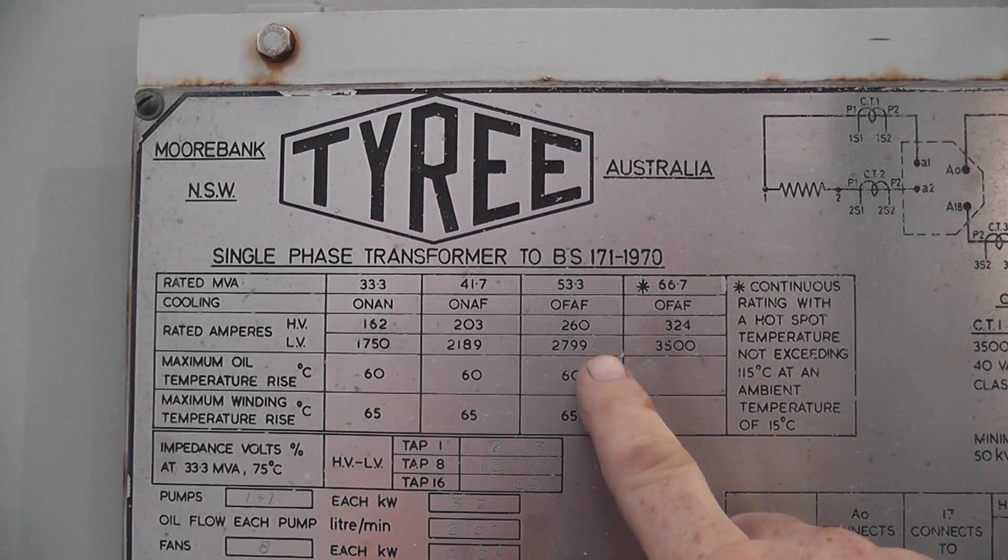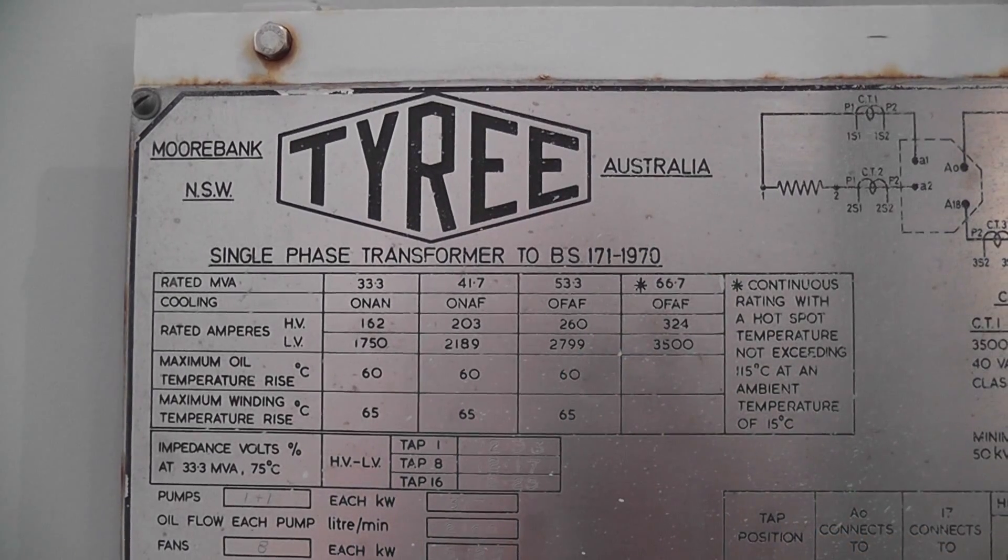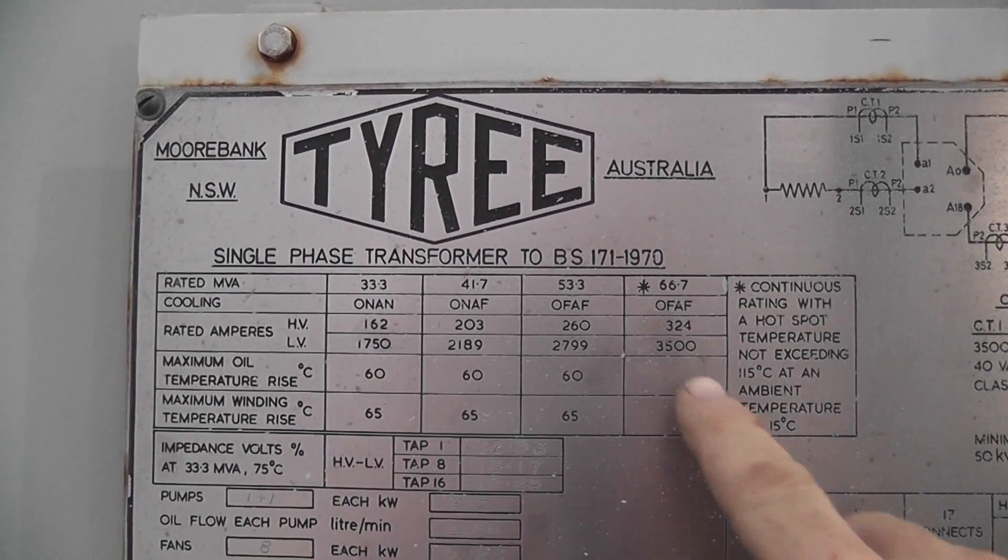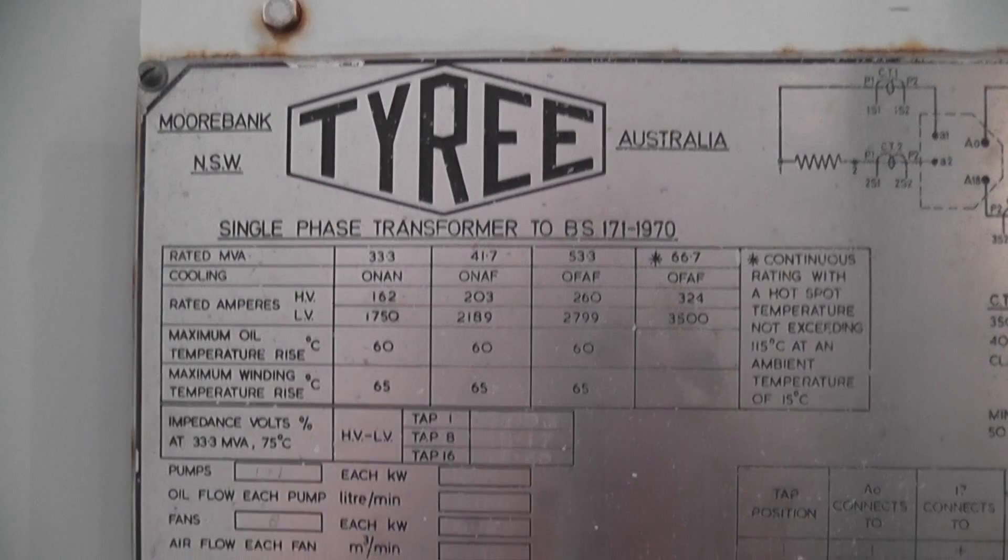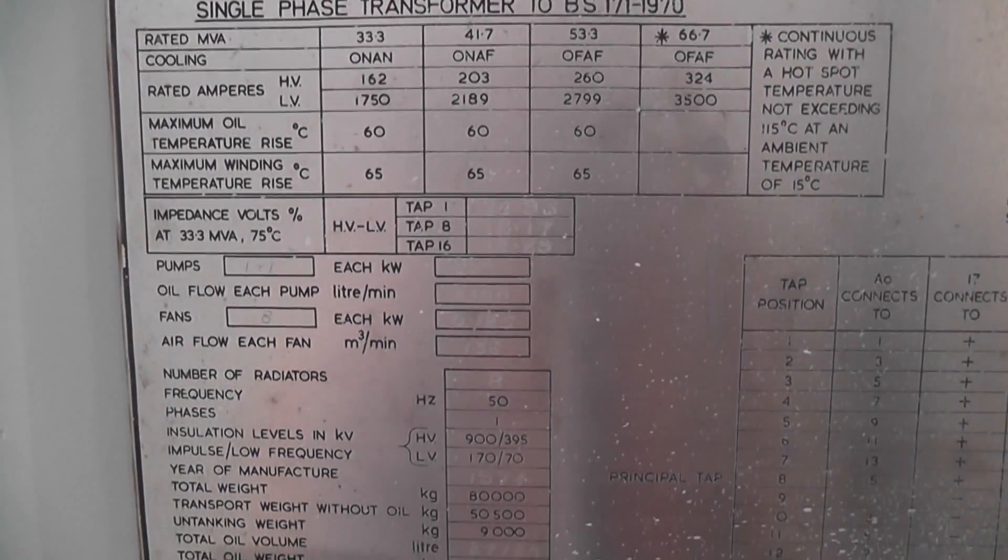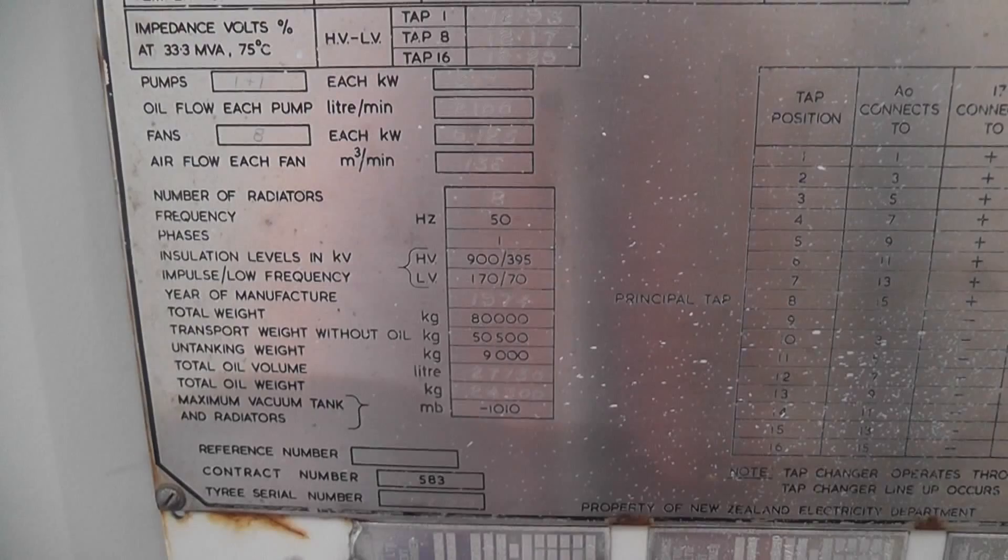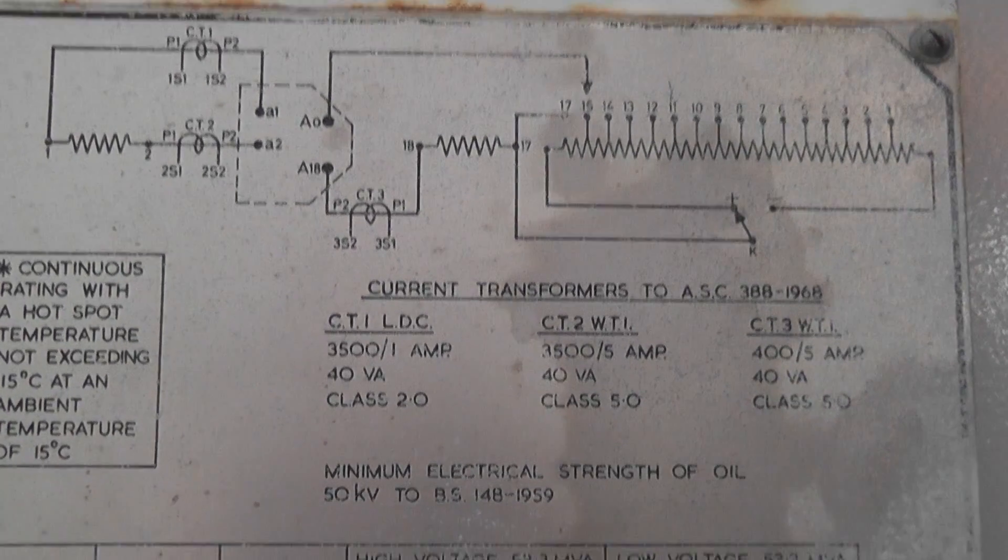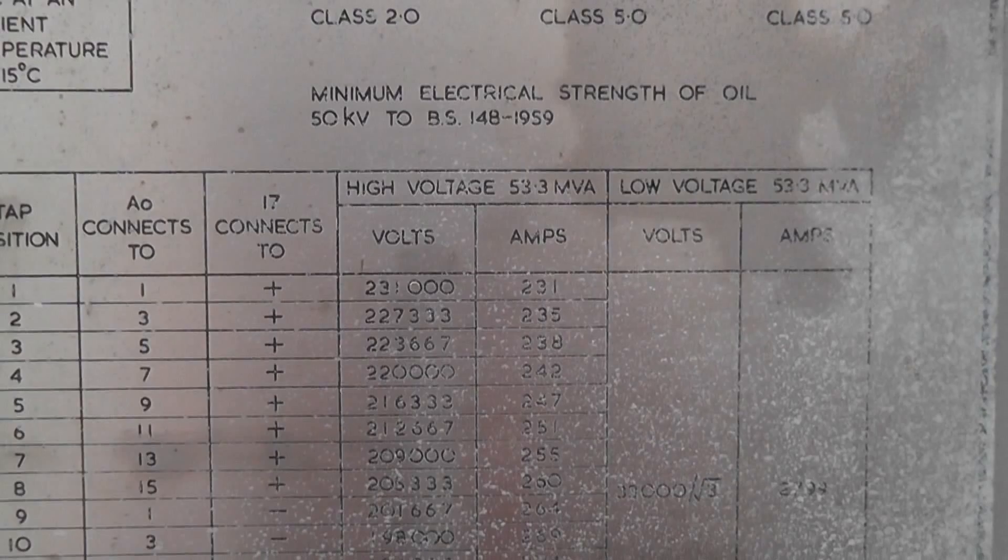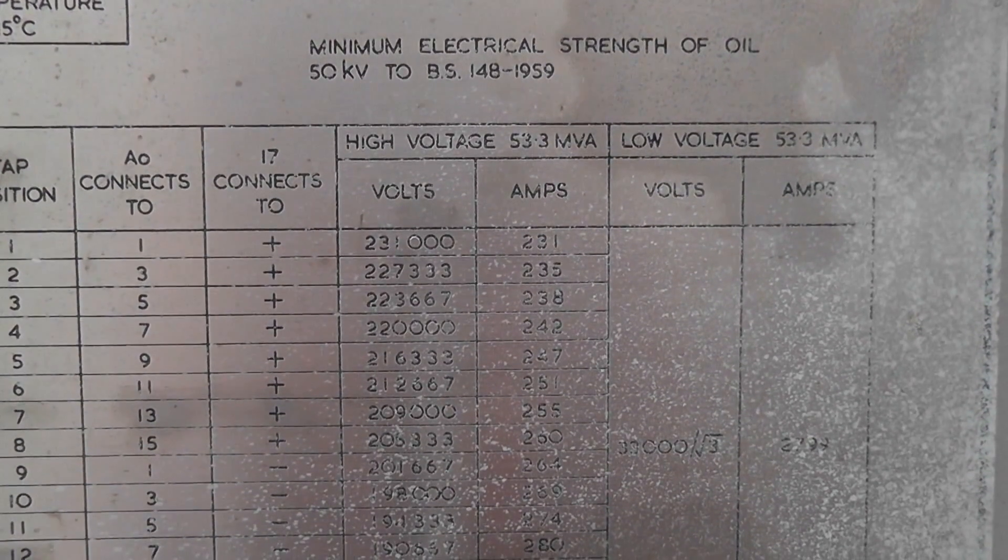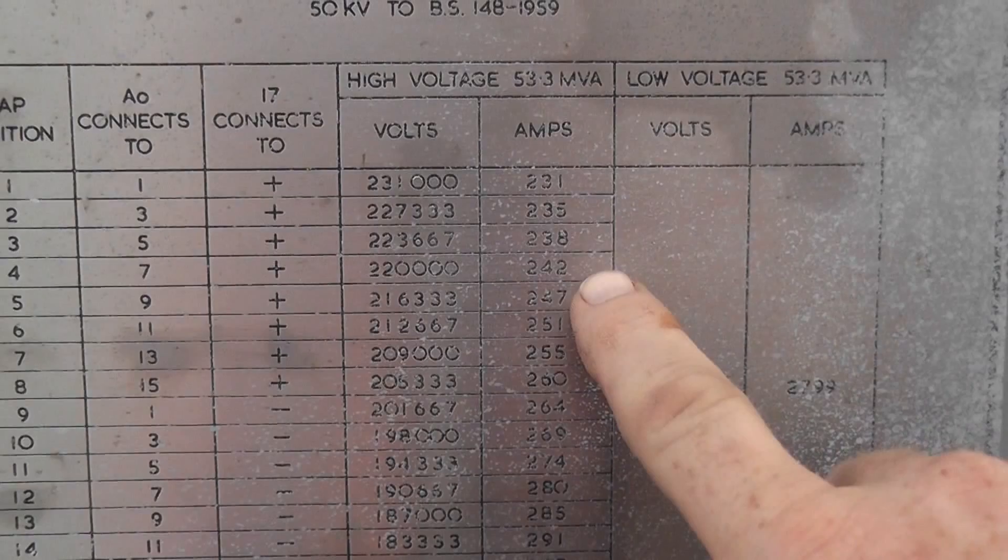Nominal continuous rating 2799 Ampere, peak rating 3500 Ampere. Some of the data, nameplate details here: 220,000 volts at 242 Ampere, 242 Ampere continuous.